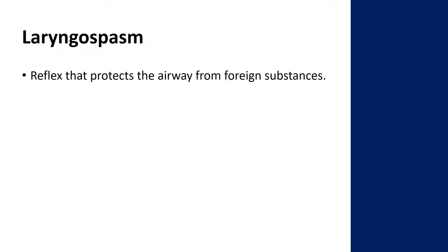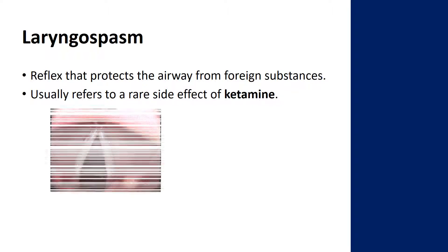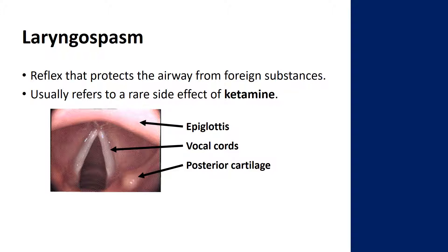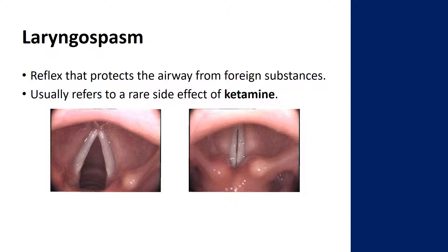The next complication is laryngospasm, which refers to what is usually a normal reflex that protects your airway from foreign bodies or substances. In procedural sedation, when people talk about laryngospasm they're usually referring to a rare side effect of ketamine. A normal airway shows the epiglottis at the top, the vocal folds in the middle, and the posterior cartilages at the back. In laryngospasm, the vocal folds snap shut, closing off the airway so air can't get through — like choking, except that usually only lasts a couple of seconds. Laryngospasm induced by ketamine can last a couple of minutes, which causes problems. You won't be looking at their airway — you'll notice stridor, coughing, or accessory muscle use as they try to suck air past the obstruction.